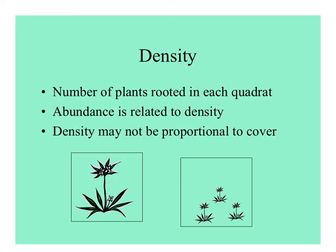We often use density, which is defined as the number of plants rooted in each quadrat. The abundance of plants is related to density, but density is not always proportional to cover. For example, the same species might have one big individual versus three little ones, but the amount of cover may be greater for the single individual.